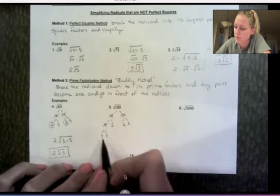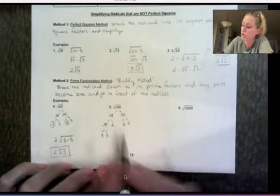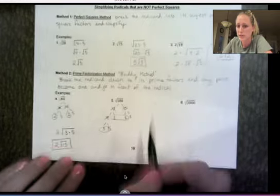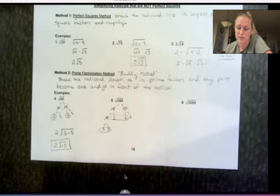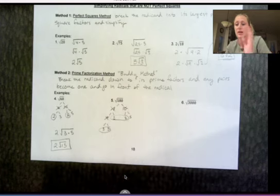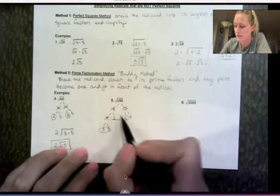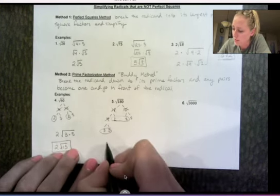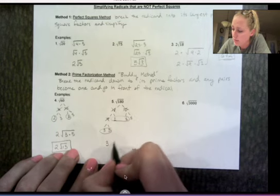So here's what I have left, 3, 3, 2, 2, 5. So I have two pairs this time. I have a pair of 3s and a pair of 2s. So those buddies become 1. I did hear this analogy once. They're right now all underneath the radical. They say when you get married, you become 1. So that's what's happening here. These buddies are becoming 1, and they're going out front. So I have a 3 out front and a 2.